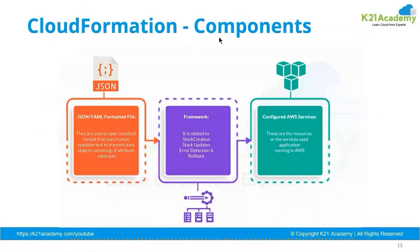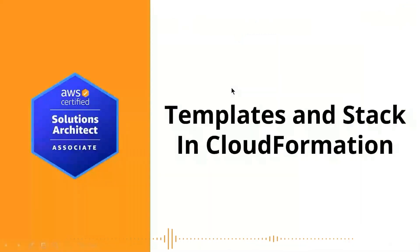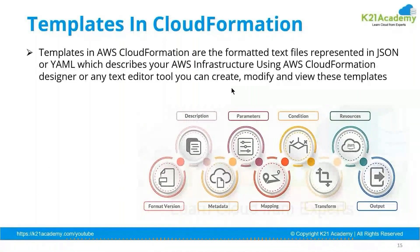The CloudFormation template components consist of a JSON or YAML file in which you define your infrastructure resources via code. Once created, you can update the stack using a stack update. If there is an error, rollbacks can happen. When working with CloudFormation there are two key things: the template and the stack. The template is a CloudFormation-formatted text file in JSON or YAML that describes what AWS infrastructure will be deployed. You can also design templates using the CloudFormation designer.